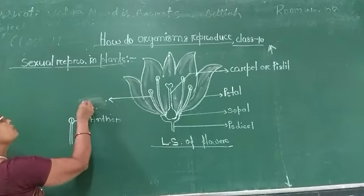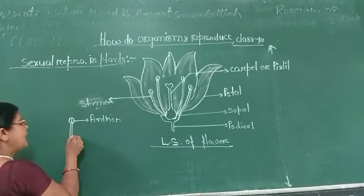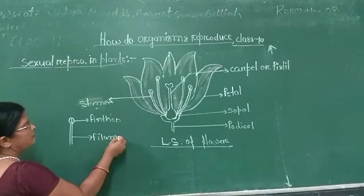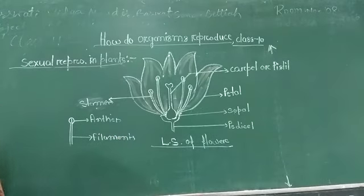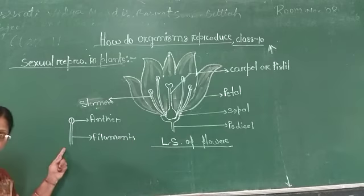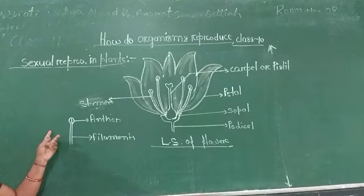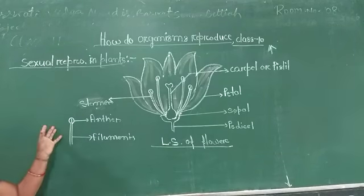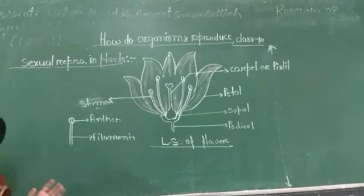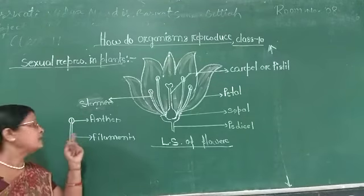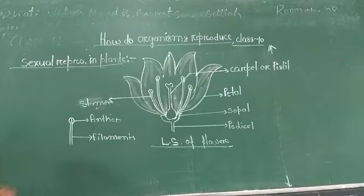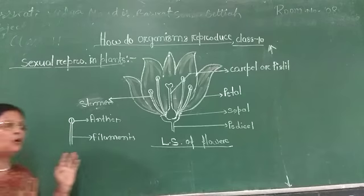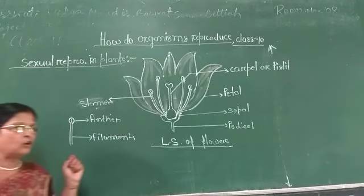The filamentous structure is also known as microsporangia. The anther, which contains the pollen sacs, is also known as microsporangium, and in the case of angiosperms it is commonly called the anther of the angiosperm.